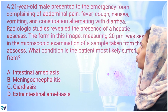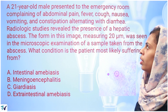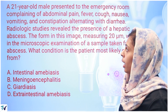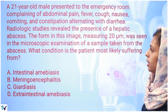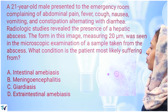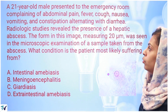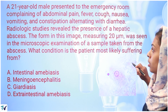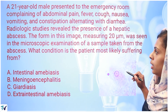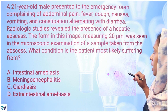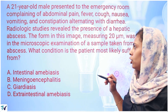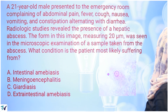Next question: A 21-year-old male presented to the emergency room complaining of abdominal pain, fever, cough, nausea, vomiting, and constipation alternating with diarrhea. Radiological studies revealed the presence of a hepatic abscess. A form measuring 20 micrometers was seen in the microscopic examination of a sample taken from the abscess. What condition is the patient most likely suffering from?